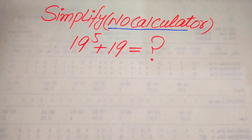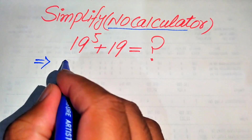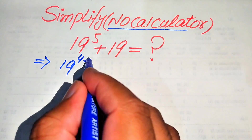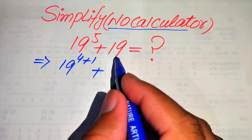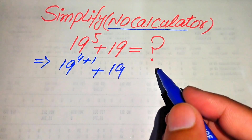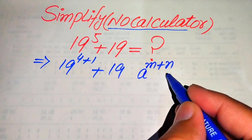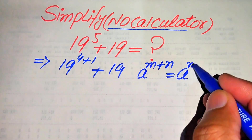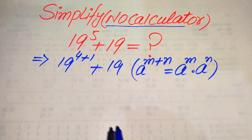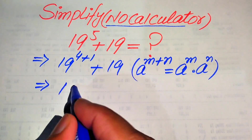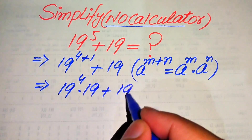First, we need to break the exponent of this term. We write the exponent as 19 to the power of 4 plus 1, and then we use the exponent law: a to the power of m plus n equals a to the power of m multiplied by a to the power of n. According to this law, 19 to the power of 5 becomes 19 to the power of 4 multiplied by 19, plus 19.